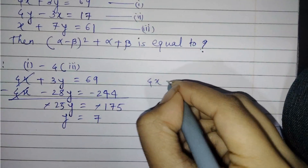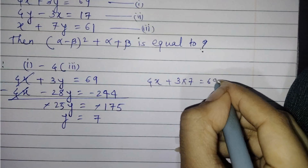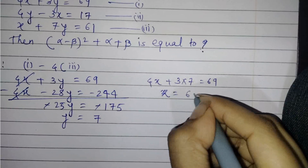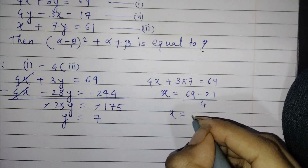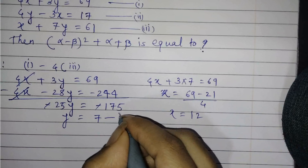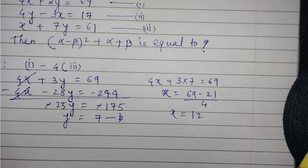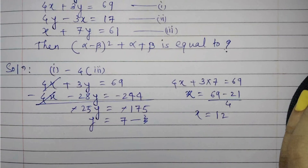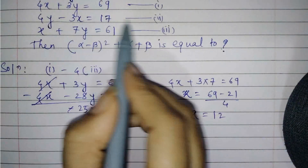The negatives cancel on both sides, so y equals 7. Then substituting back: 4x plus 3 times 7 equals 69, so x equals 69 minus 21 divided by 4, which gives x equals 12. So from solving the first and third equations, we get y equals 7 and x equals 12.